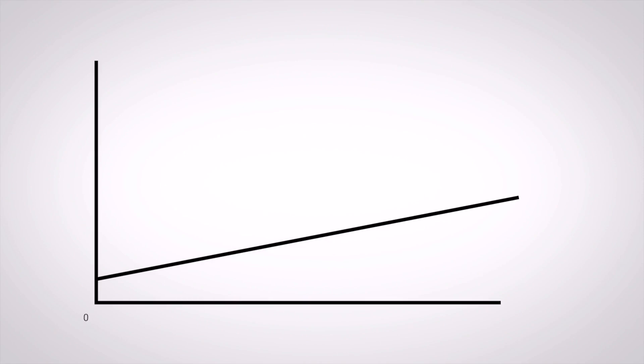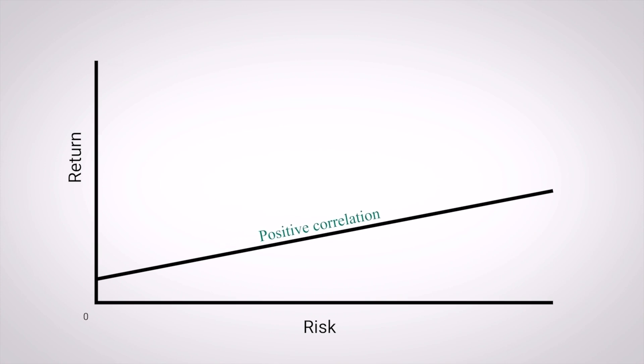And there was a graphic that we saw all the time. It shows return on the vertical axis, risk on the horizontal axis, and an upward sloping line to the right. We call that a positive correlation.